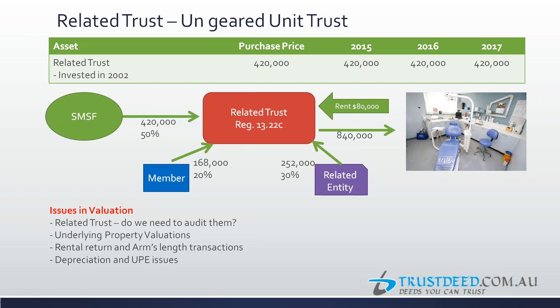One way to check market value is the rent being paid — and the rent must be at arm's length under section 109 of the SIS Act. If the property is worth approximately 2 million now (purchased in 2002) and only $80,000 rent is being received, the rent paid by the discretionary trust running the surgery may not be at market value, which could constitute a contravention of section 109.